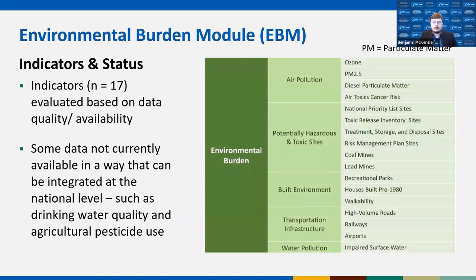This screening process resulted in 36 indicators across all three modules. The environmental burden module includes 17 indicators separated into five functional domains representing aspects of air pollution, proximity to potentially hazardous and toxic sites, features of the built environment, proximity to noisy and polluting transportation infrastructure, and water pollution. All of these factors contribute to community health and well-being and many build on each other, amplifying overall effects on health — which is why it's critical to measure these factors cumulatively.